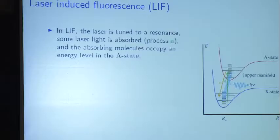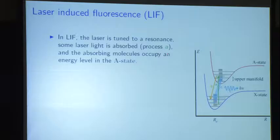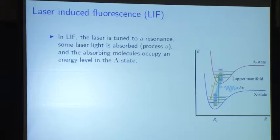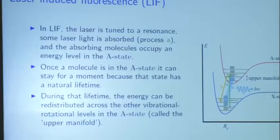I showed a picture similar to this before, but now I'm going to complicate it a little bit. We're looking again at a molecule in the X state and in the A state, and we talked yesterday about what causes these structures. Now we're going to tune a laser — process A — and have the laser absorbed, going from the lower level up to that excited state.